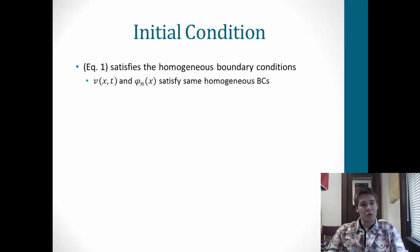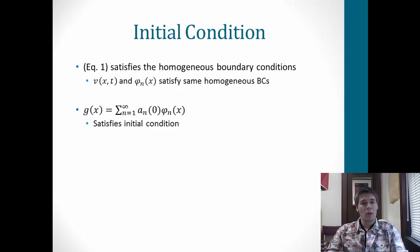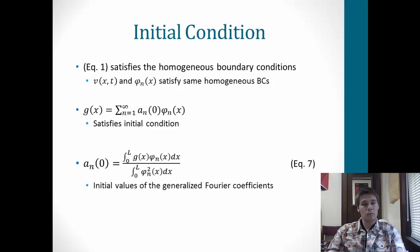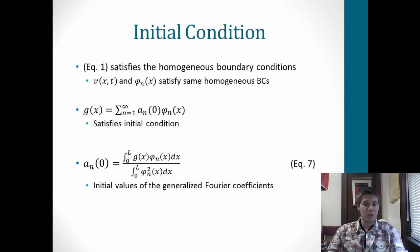It's also important to note that initial conditions are involved. Equation 1 satisfies the homogeneous boundary conditions, since v(x,t) and φ_n(x) satisfy the same homogeneous boundary conditions. So we can expand the initial condition g(x) as a summation from n=1 to infinity of a_n(0) times φ_n(x). Due to orthogonality, we can find a_n(0) as the integral from 0 to L of g(x)·φ_n(x) dx divided by the integral from 0 to L of φ_n(x)² dx — the initial value of the generalized Fourier coefficient.